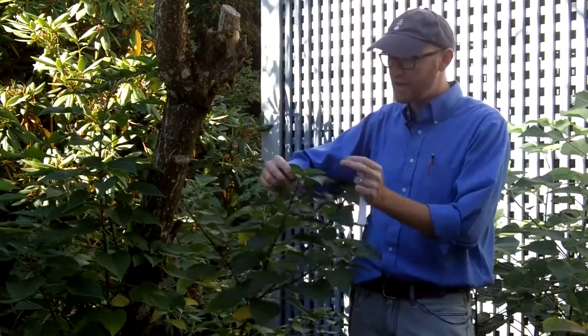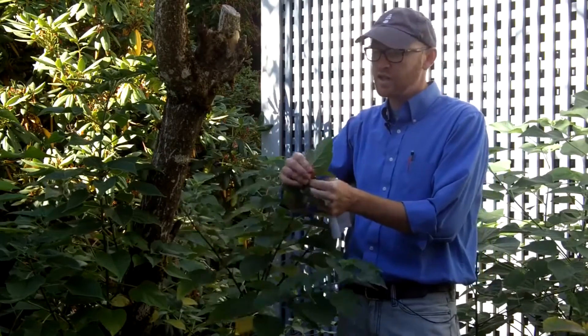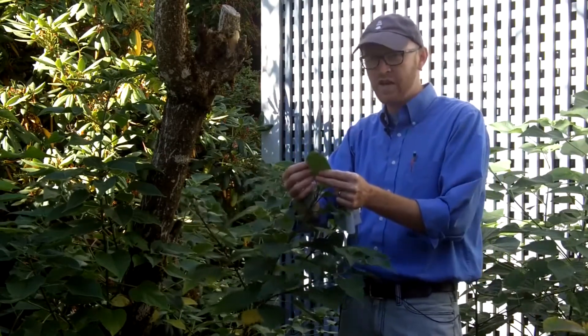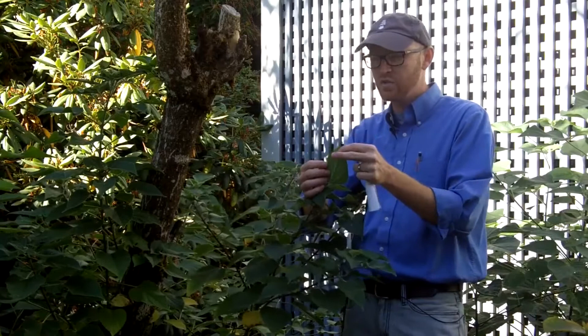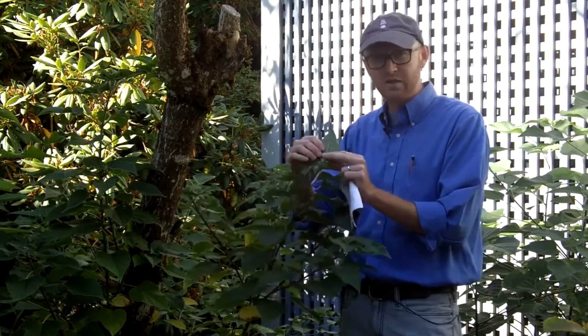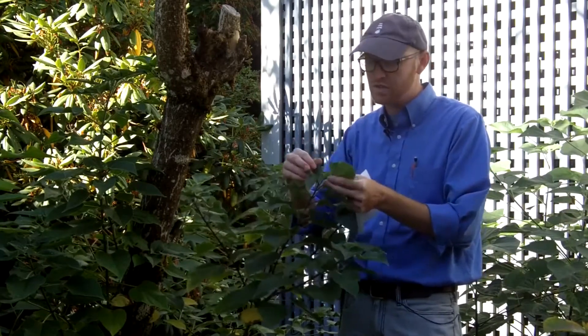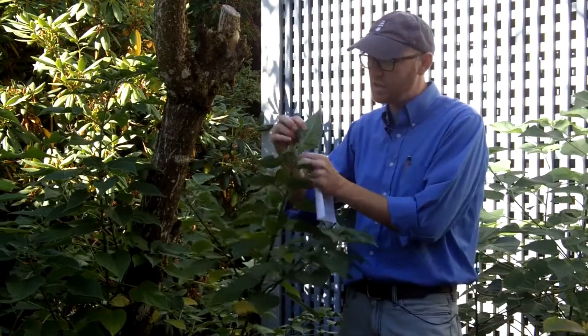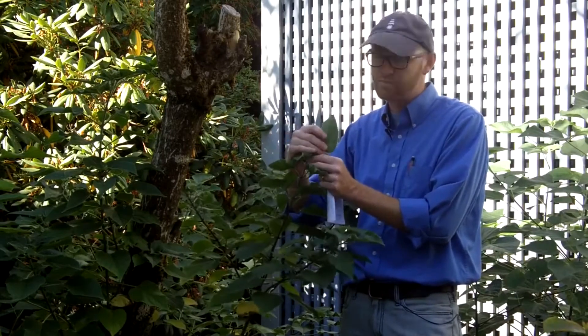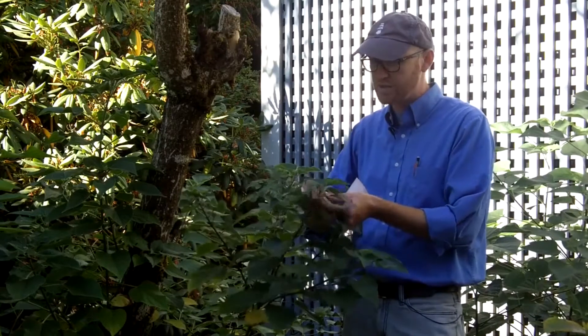But Harlequin Glorybower has oppositely arranged leaves. They are sort of this spade-shaped, ovate with acute acuminate apex. Lots of downy pubescence on the new growth that you see, particularly underneath and on the petiole, this white silvery, very soft tomentose pubescence.